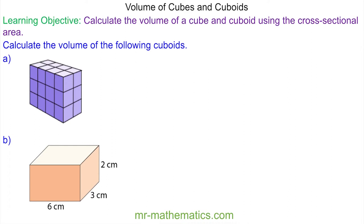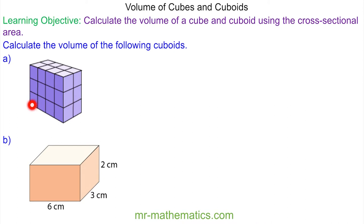Welcome to a lesson on finding the volume of a cube and a cuboid. To work out the volume of a cuboid, we need to find the area of a cross-section, which could be in this face here, and we multiply the area of a cross-section by the depth.